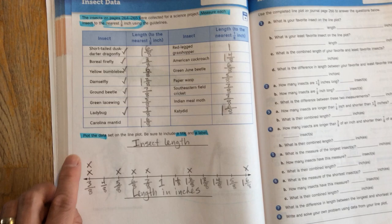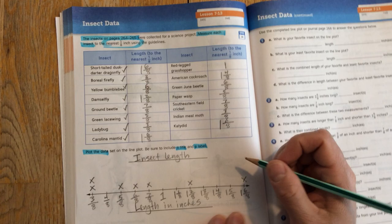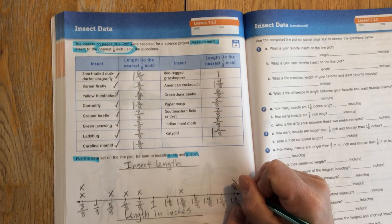The Carolina mantid is also 1 and 6 eighths of an inch, just like the dragonfly here. So again, I'm going to stack that x. And that's how I go about building my line plot graph.